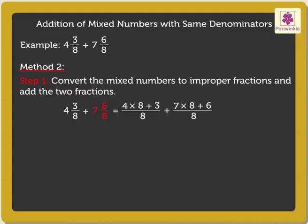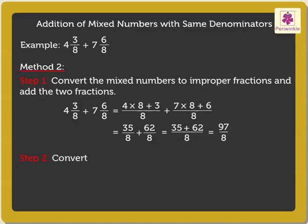equals (7×8+6)/8, which is 35/8 plus 62/8. That is (35+62)/8, which equals 97/8. Step 2: